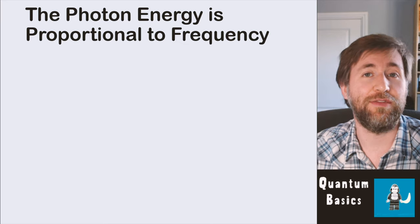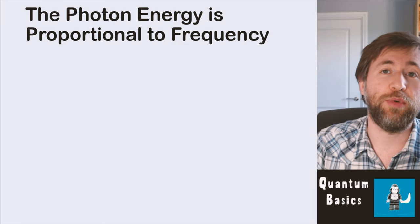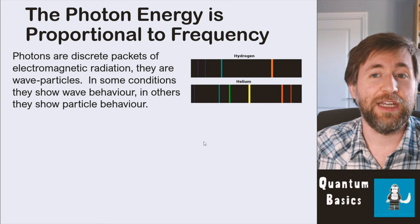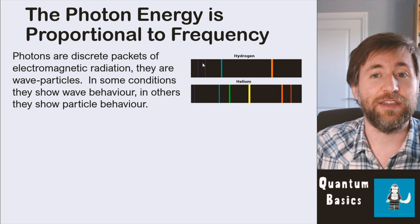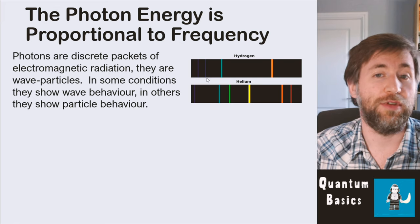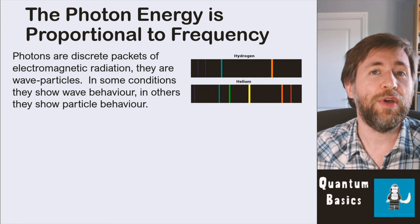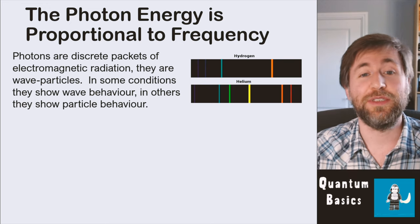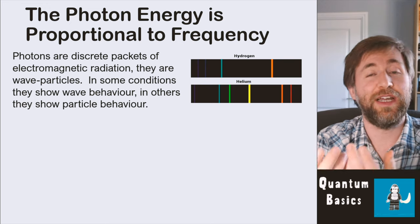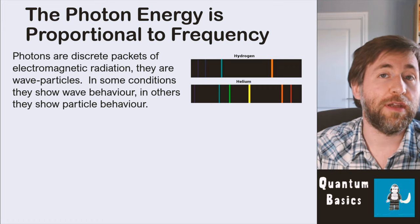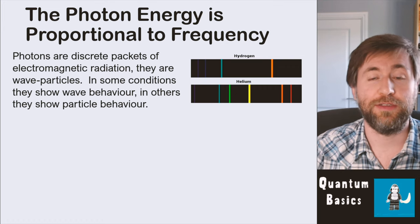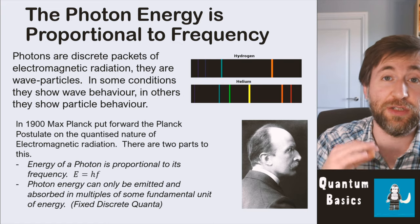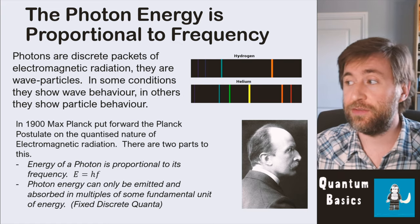Let's establish the key idea of quantum. The photon energy is proportional to the frequency — we have Max Planck to thank for this. The higher the energy, the higher the frequency of a photon, of a wave-particle of light. Wave-particle duality is a central idea in quantum: things show both wave and particle behaviour. Max Planck put forward the Planck postulate, which essentially quantises light and gives us the photon.